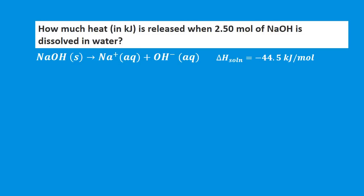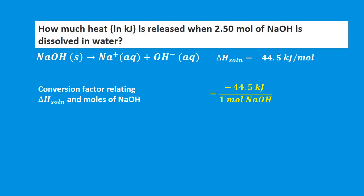Problem: How much heat in kilojoules is released when 2.50 moles of sodium hydroxide is dissolved in water? The molar heat of solution is −44.5 kJ/mol (exothermic). Using the conversion factor of 44.5 kJ per mole of NaOH, multiplying by 2.50 moles gives 111 kilojoules released.